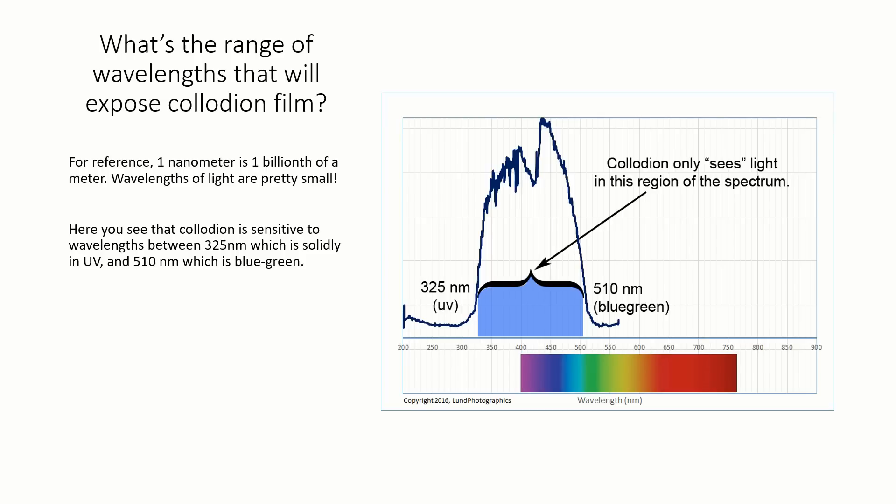For bromoiodized film, this is a region from about 325 nanometers in the UV to about 510 nanometers, which is blue-green.